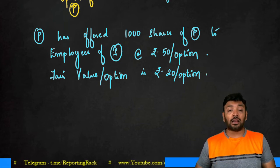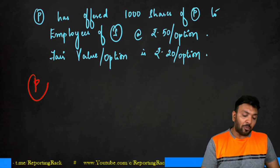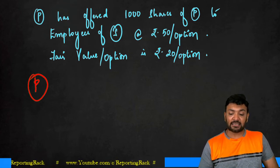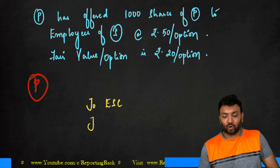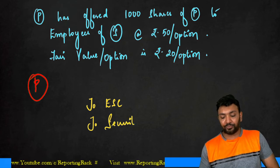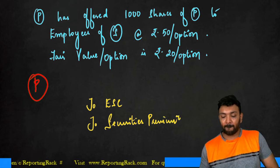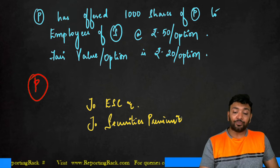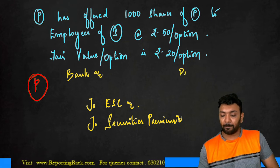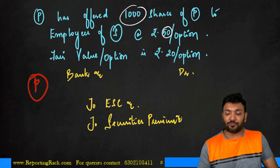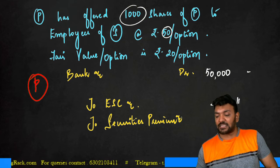In such situation, if I have to go for a recording for this transaction, how do you record? Look at the books of P Limited. P will record this entry like this: to equity share capital, to securities premium, debit bank account to the extent of 50 rupees. 50 rupees on 1,000 options is 50,000. 1,000 shares of 10 rupees each is 10,000.